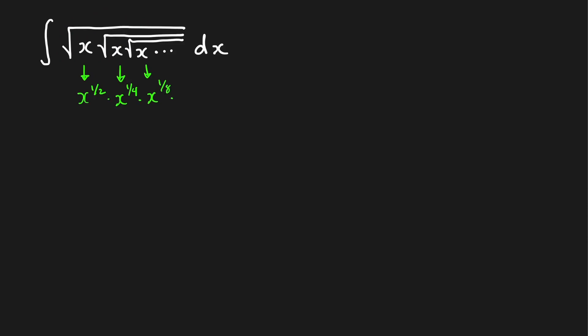So we only have here a product, and applying the rule on exponents — same base, just add the powers — we have one half plus one fourth plus one over eight, plus and so on.